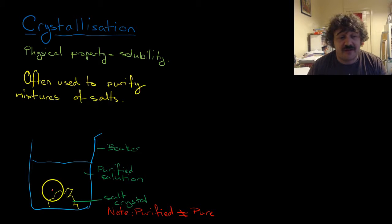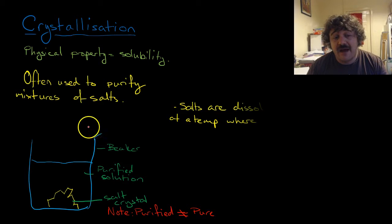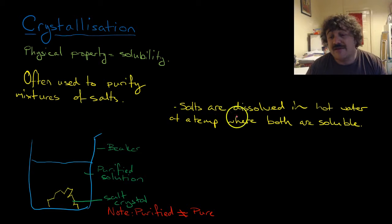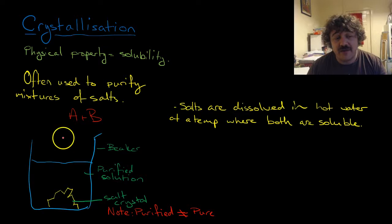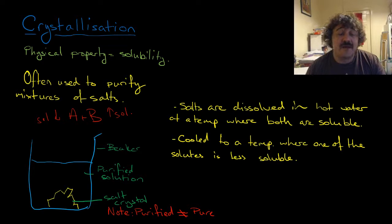Basically, the salts are dissolved in hot water at a high temperature. So you might have a mixture of salt A and salt B, and they're both mixed in water at high temperature. Say that B has a high solubility and A has a low solubility, so they're heated up to a temperature where they'll both dissolve.